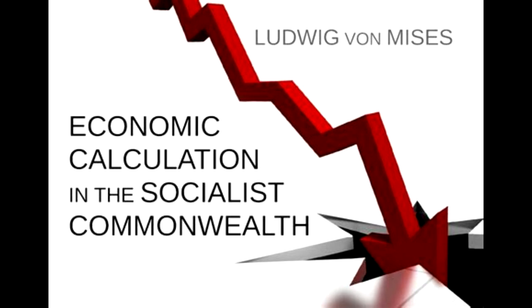One may anticipate the nature of the future socialist society. There will be hundreds and thousands of factories in operation. Very few of these will be producing wares ready for use. In the majority of cases, what will be manufactured will be unfinished goods and production goods. All these concerns will be interrelated. Every good will go through a whole series of stages before it is ready for use. In the ceaseless toil and moil of this process, however, the administration will be without any means of testing their bearings. It will never be able to determine whether a given good has not been kept for a superfluous length of time in the necessary processes of production, or whether work and material have not been wasted in its completion. How will it be able to decide whether this or that method of production is the more profitable? At best, it will only be able to compare the quality and quantity of the consumable end product produced, but will in the rarest cases be in a position to compare the expenses entailed in production.